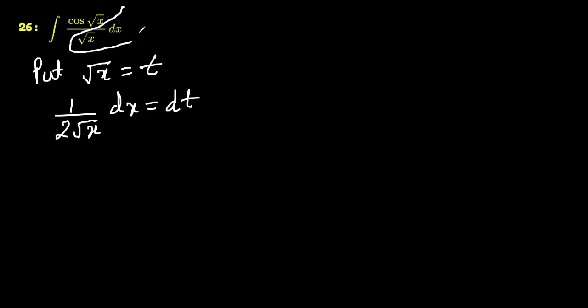Now here we have root x dx. We want to take this 2 to the right side. This will imply 1 over square root of x times dx is equal to 2 dt.